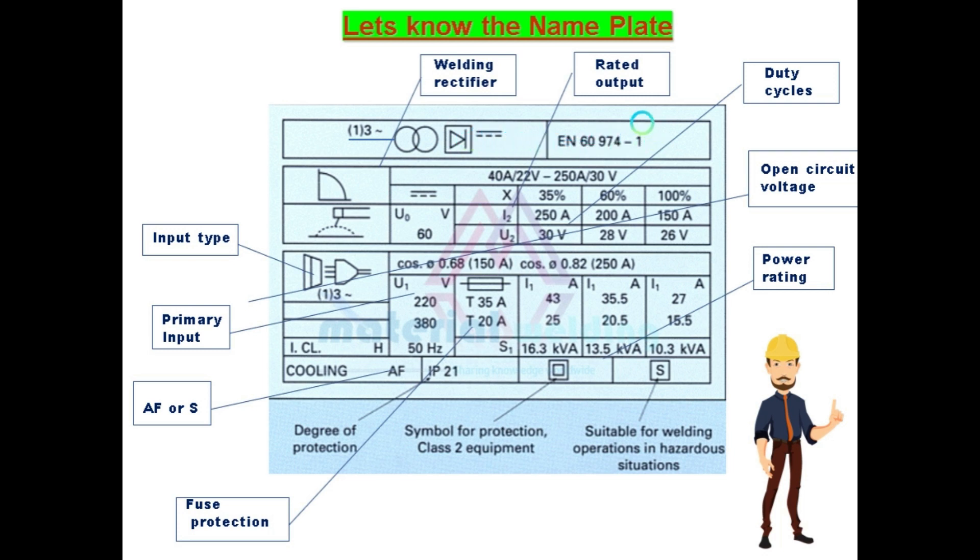This is the standard where we can find the details of protection class, insulation class. This is the characteristic type. This source can be used for shielded metal arc welding as this is a constant current type.